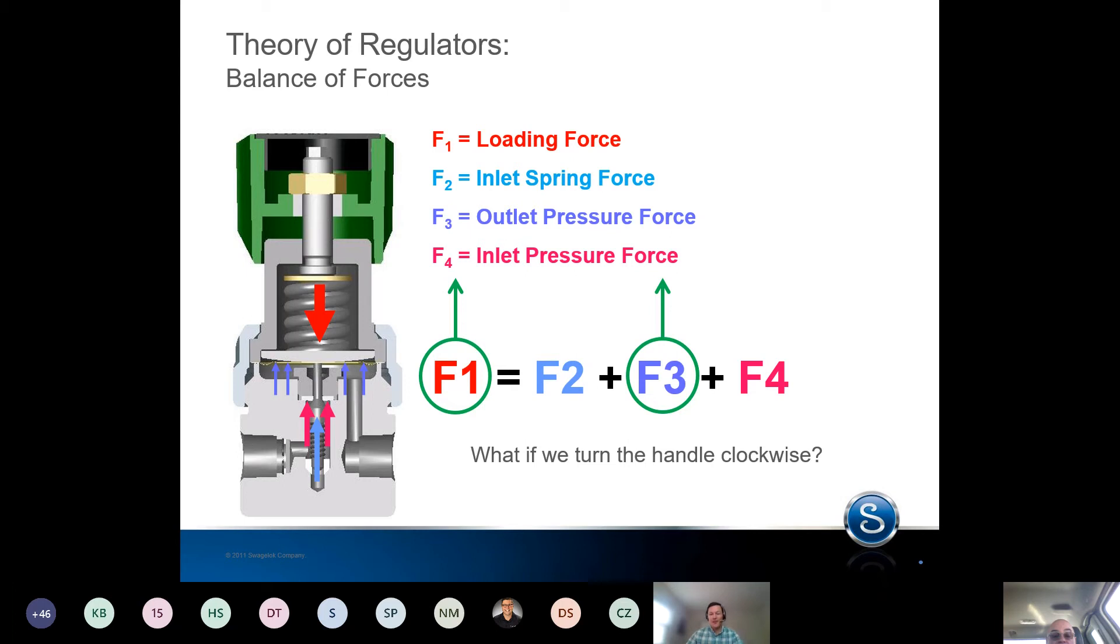The inlet spring force doesn't change a lot—it's kind of just a light spring. So the only thing that can change to maintain that balance within the regulator is F3. F3 has to also rise by some proportional amount, and that has everything to do with the sensing area and all that.